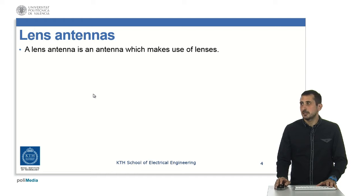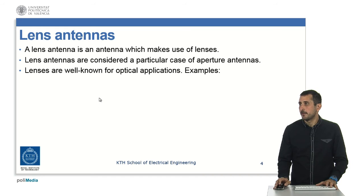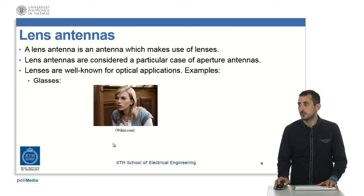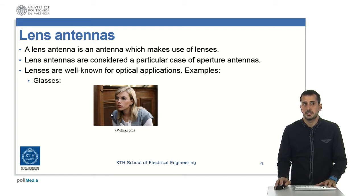Essentially, a lens antenna is composed of a feeding plus a lens. Traditionally in the books, these lenses were considered as a particular case of aperture antennas, because essentially what we are doing is just increasing the aperture of our initial feeding. Lenses are very well known, particularly in optical applications. Some classical examples are glasses. Normally these lenses are used to correct aberrations that our eyes — which are like an array of antennas — are having.